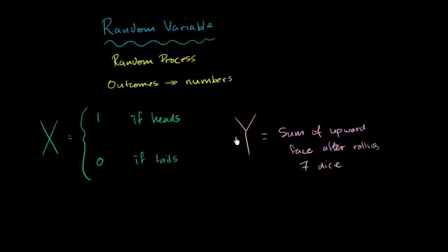Once again, we are quantifying an outcome for a random process. The random process is rolling these 7 dice and seeing what sides show up on top. And then we are taking the sum and defining a random variable in that way.